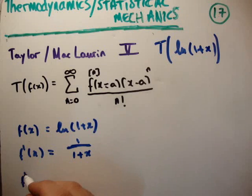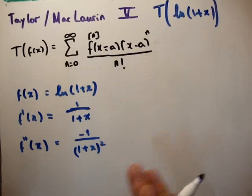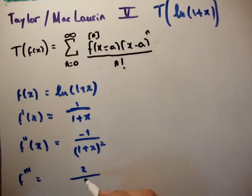If we take the second derivative of our function, we're going to get negative 1 over (1 plus x) squared. If we take the third derivative of our function, we're going to get 2 over (1 plus x) cubed.